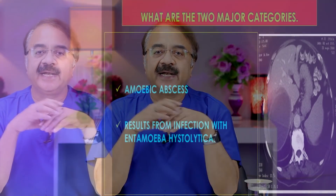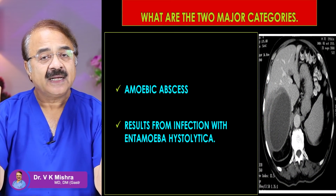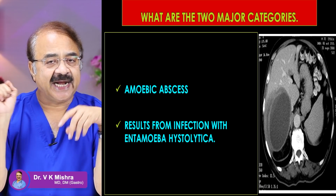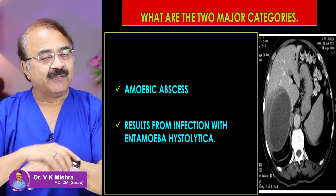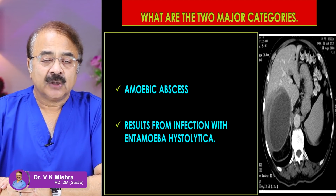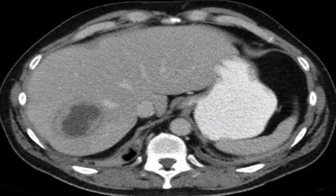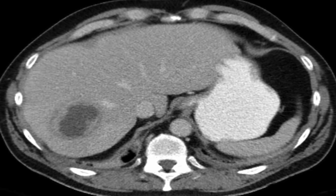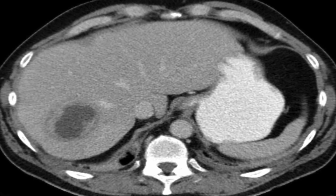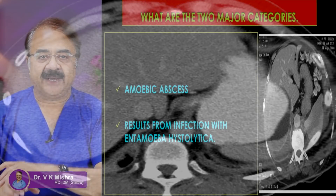On the contrary, when we talk about amoebic liver abscess, there is a protozoa called Entamoeba histolytica. So amoebic liver abscess is caused by this protozoa, Entamoeba histolytica.